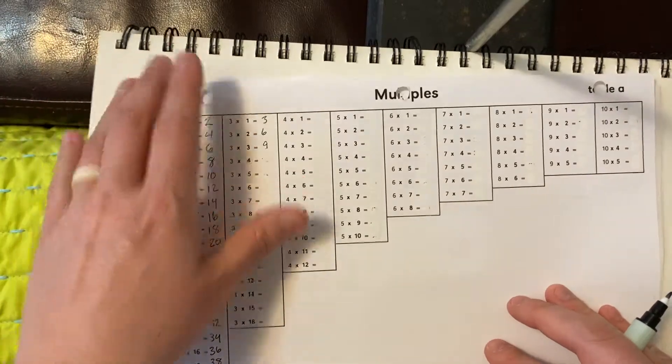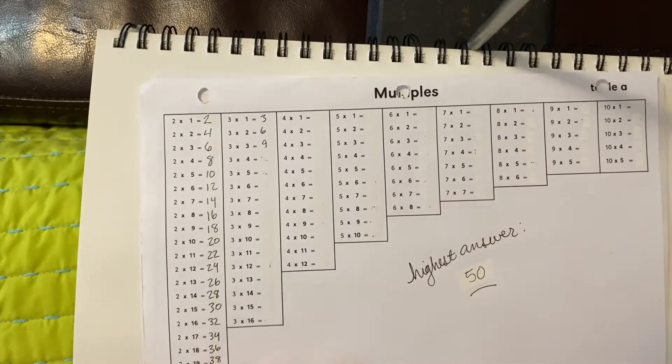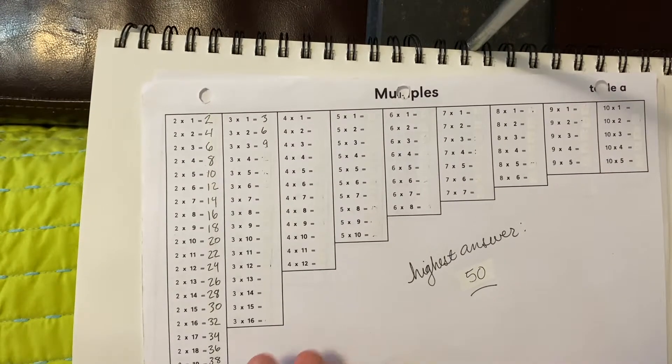Do you see how I'm writing small and right? My answer's right after the equal sign. You don't want to write too big and have it get out of order. The highest answer you're going to get is 50. If you get any higher than 50, something is amiss.